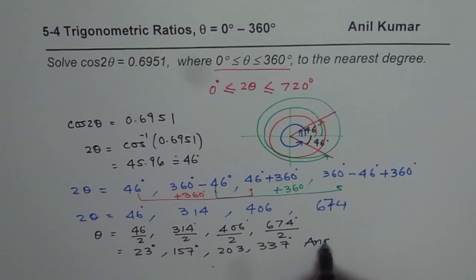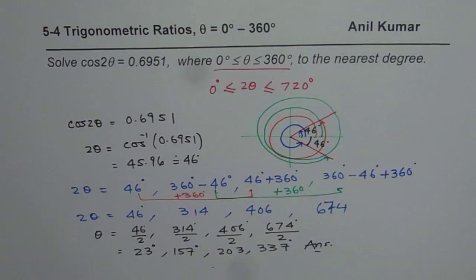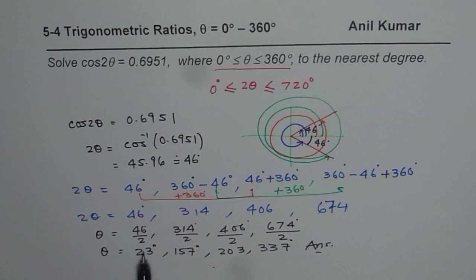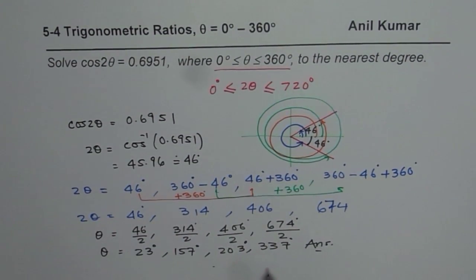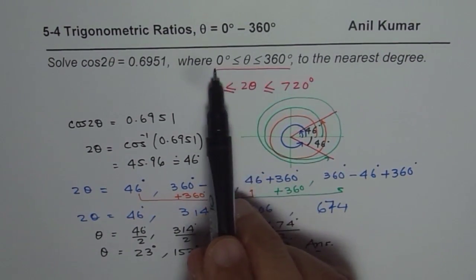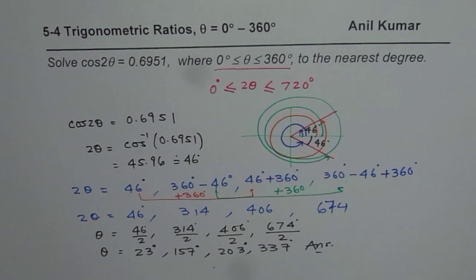So these are all the answers for the given question. Your value of θ is 23 degrees, 157 degrees, 203 degrees, and 337 degrees. As you can see the angle θ which you get is between 0 and 360 degrees, and that is the way it should be solved. I hope you understand and appreciate the approach. I am Anil Kumar. You can subscribe to my videos and learn a lot. Thank you and all the best.